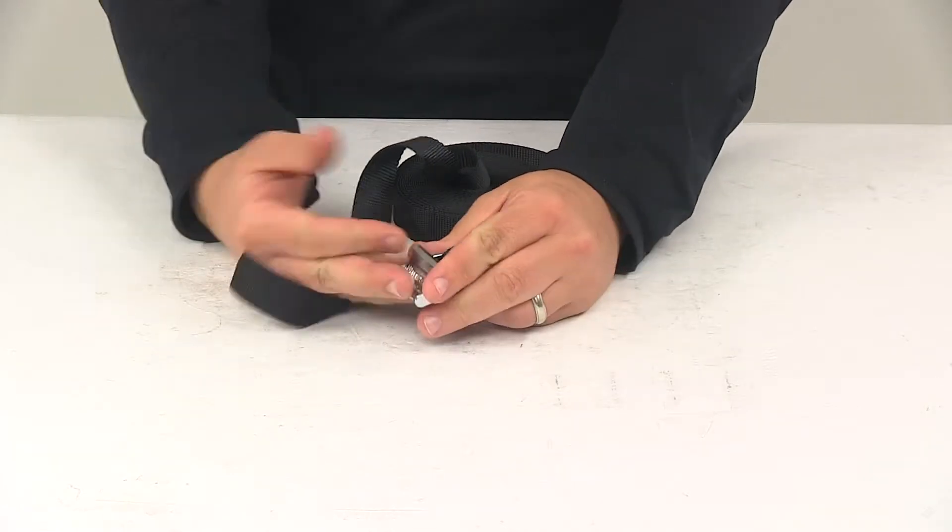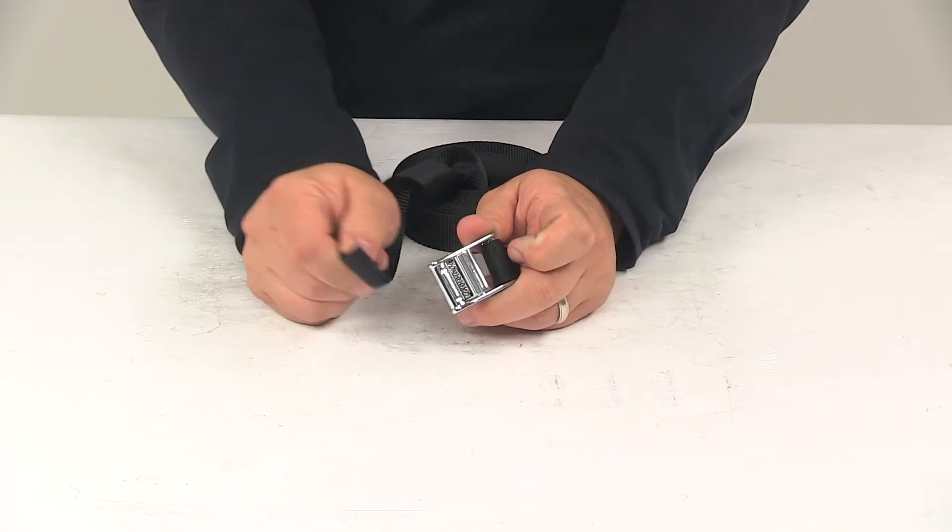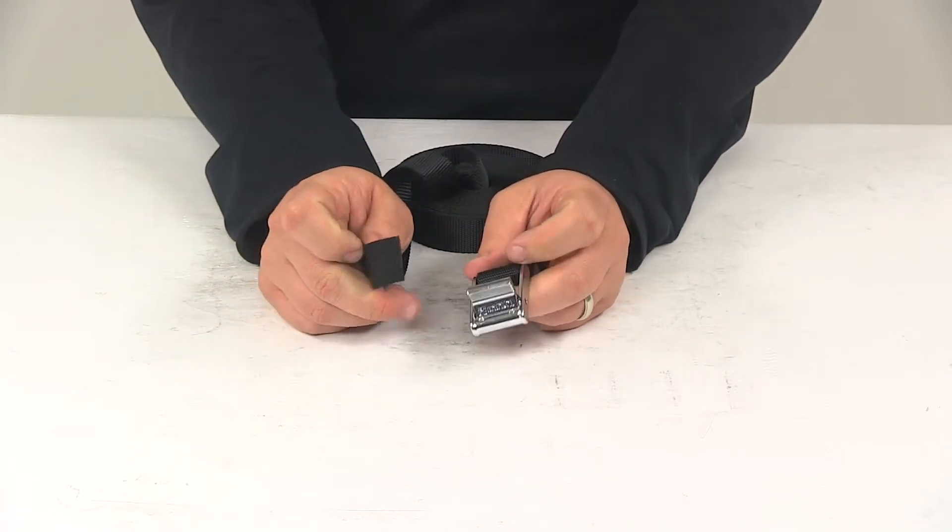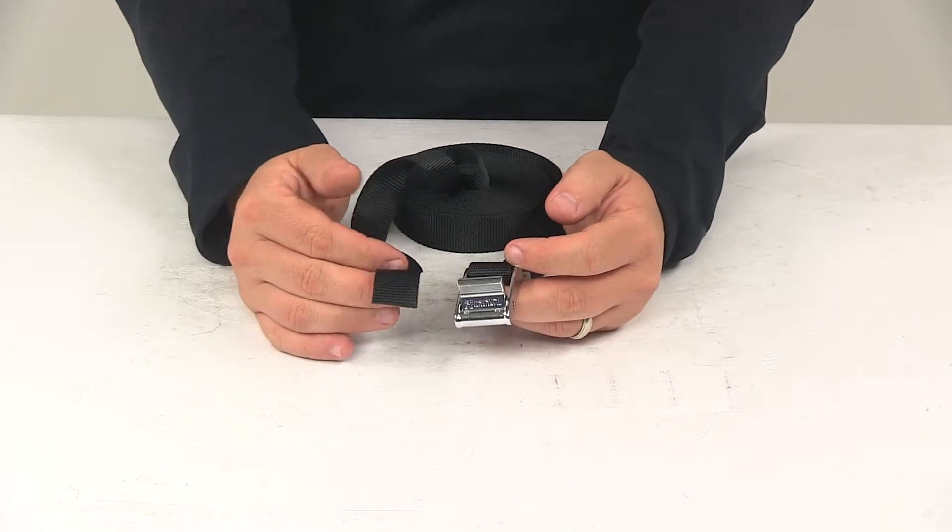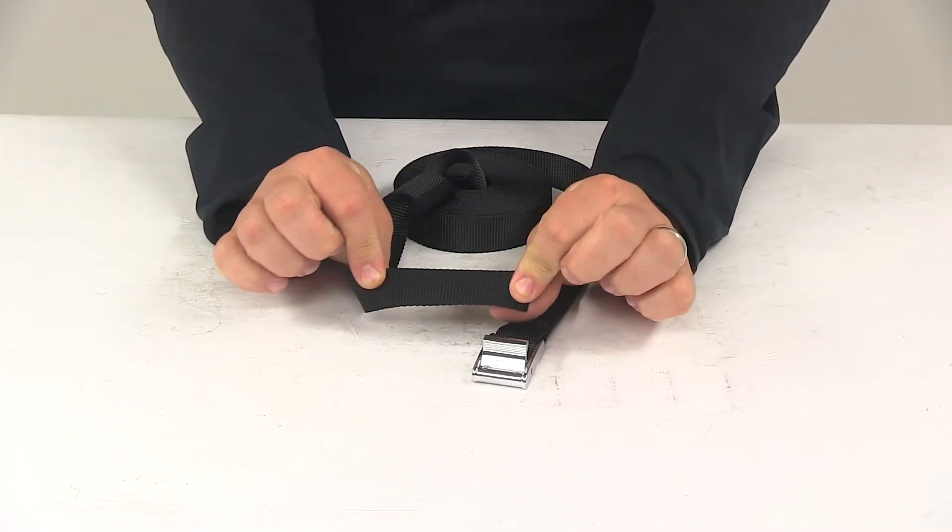So that's a cinching tie down. That's a really nice design. Again, plain end of the strap feeds through the buckle. That way you can easily cinch the strap around your cargo or gear. The material is a durable abrasion resistant polyester webbing.